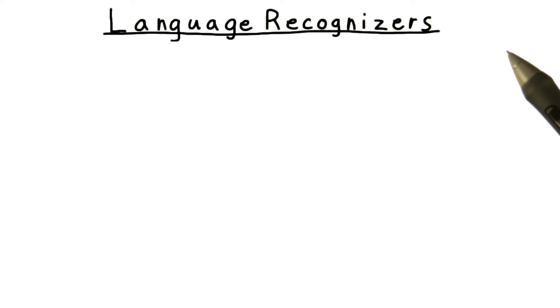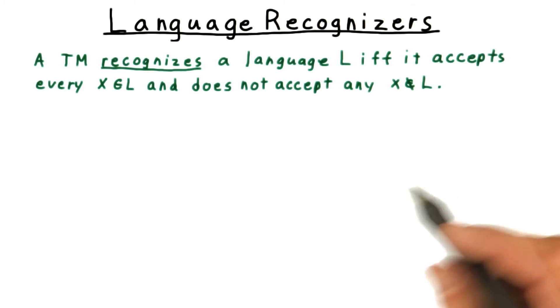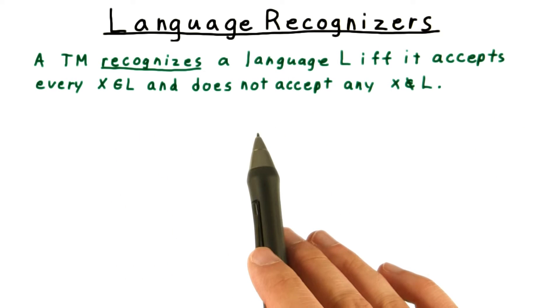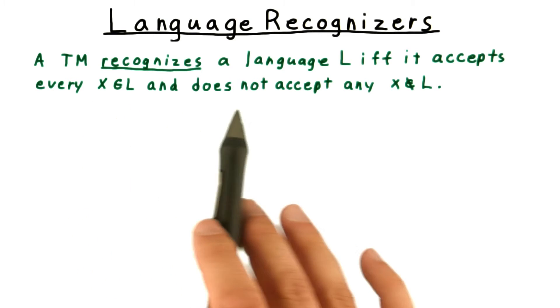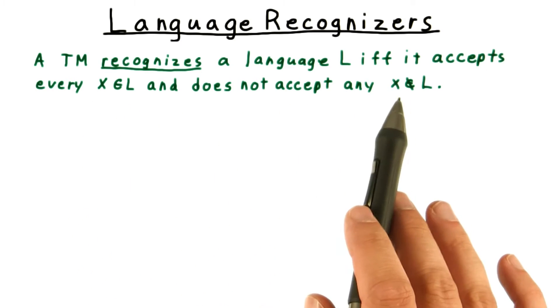This possibility of Turing machines looping forever leads us to define the notion of a language recognizer. We say that a Turing machine recognizes a language if and only if it accepts every string in the language and does not accept any string not in the language.